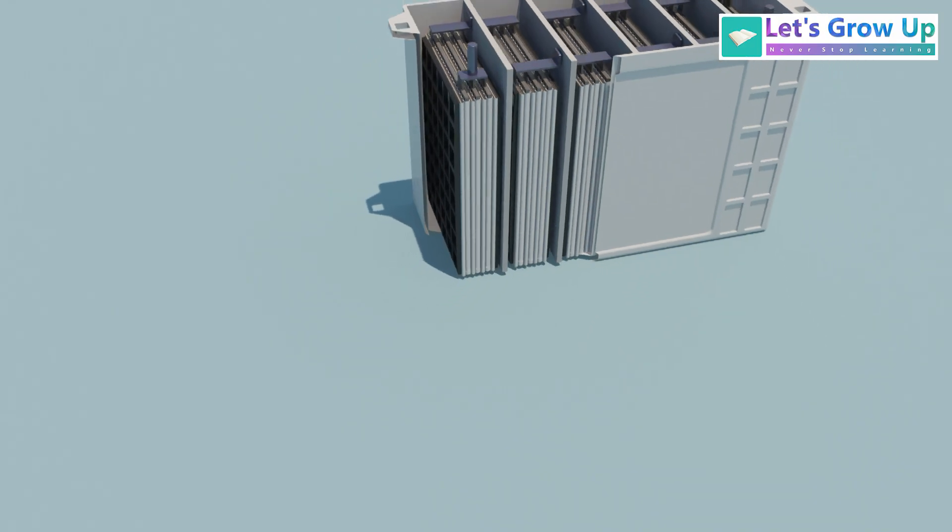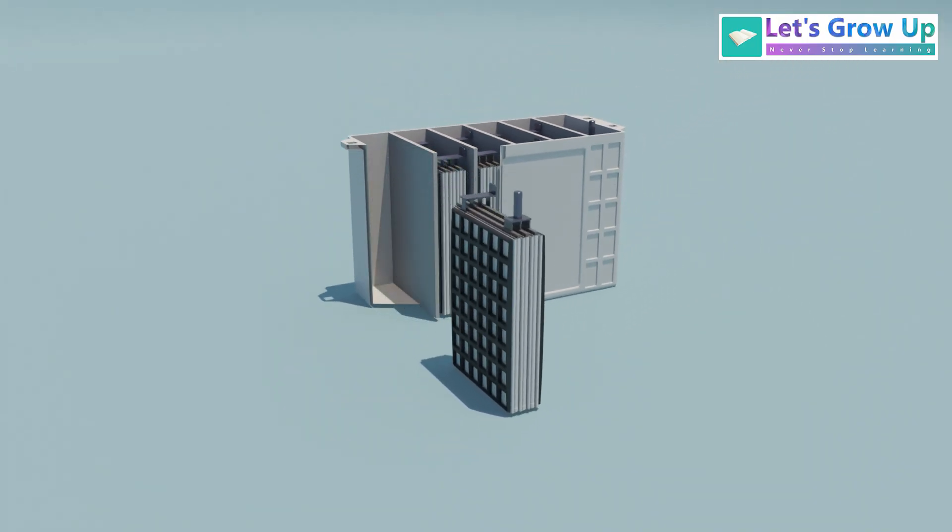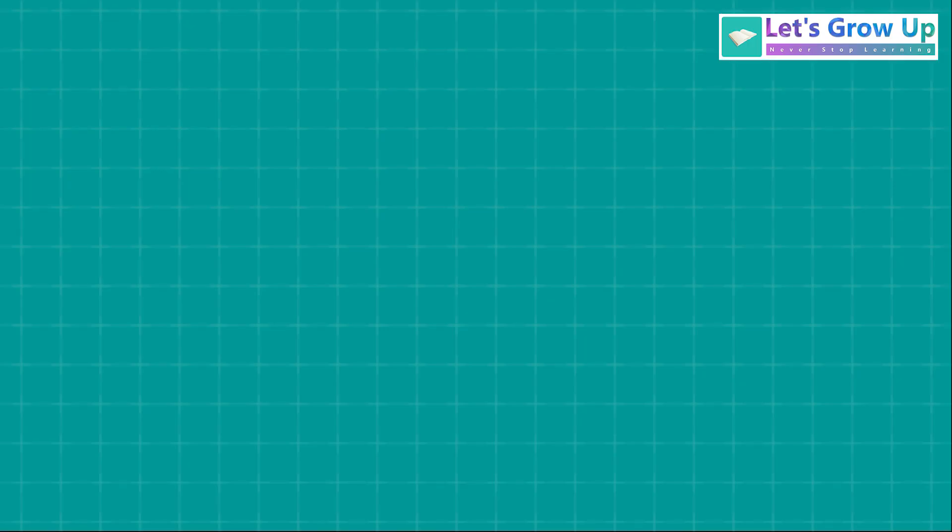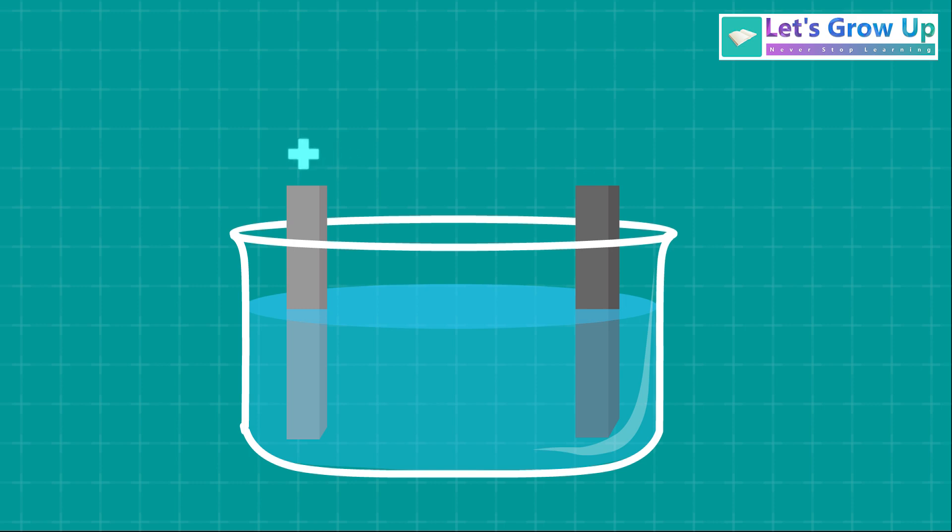To understand its working function, let's focus on a single cell within this battery. So, we have taken a positive plate and a negative plate, along with the electrolyte, which is sulfuric acid, H2SO4, mixed with water.